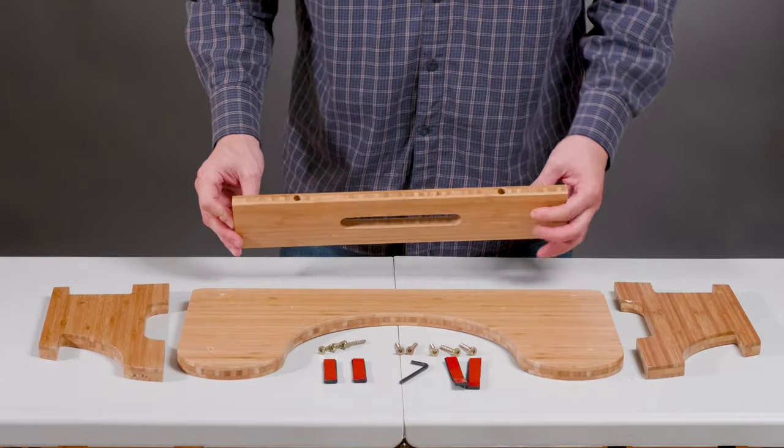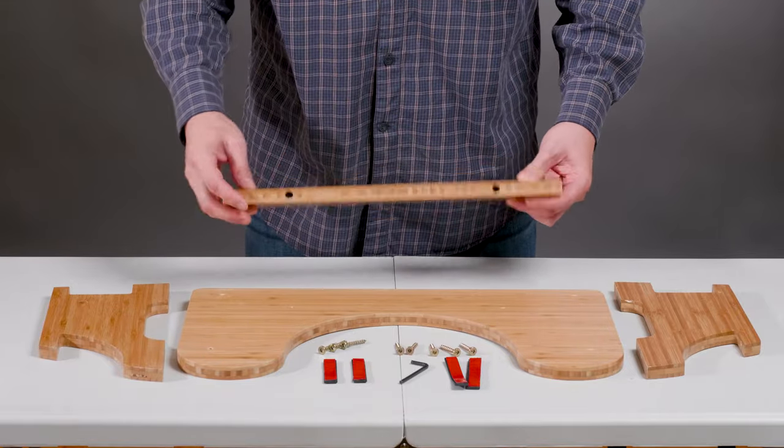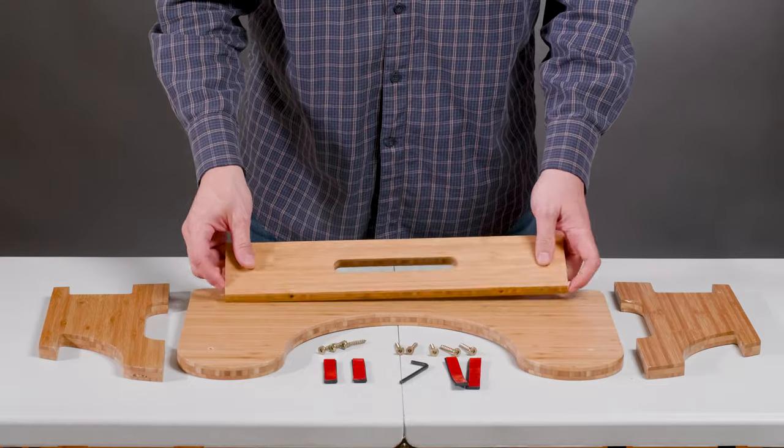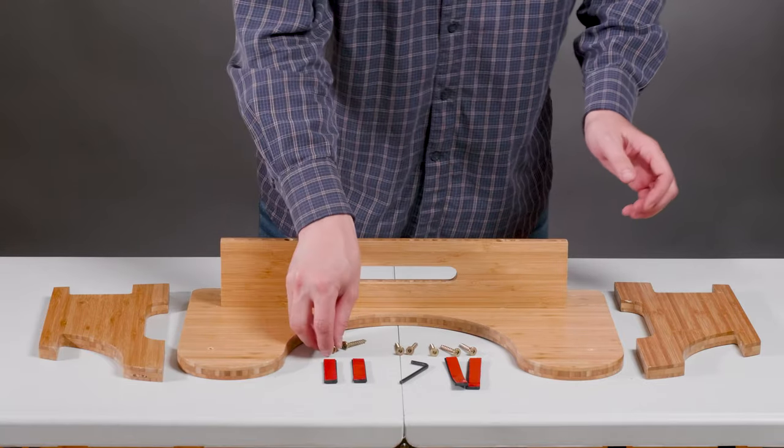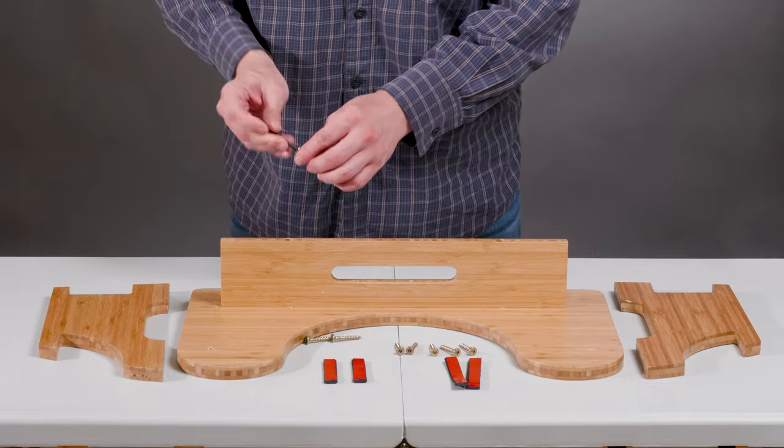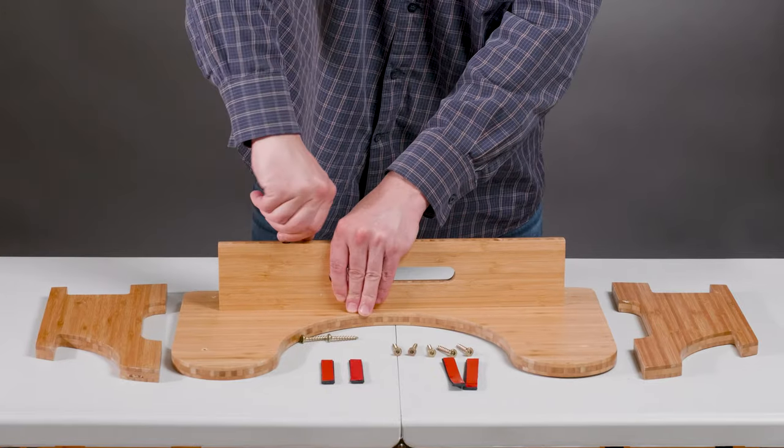We start with the cross beam. The larger holes need to be on top and the smaller ones against the main board. Grab a screw, the allen key, slide the screw in and tighten it.